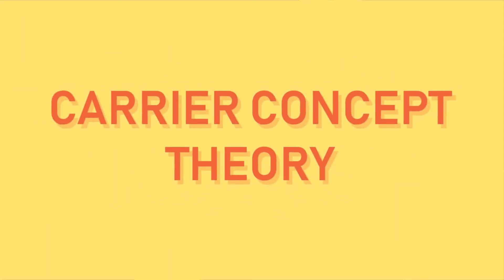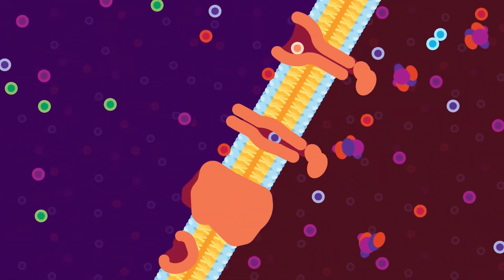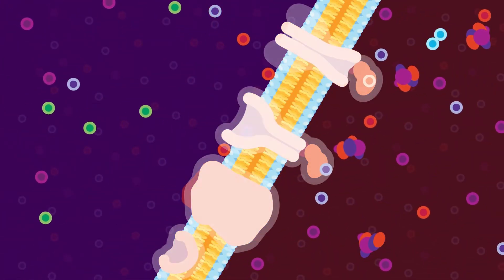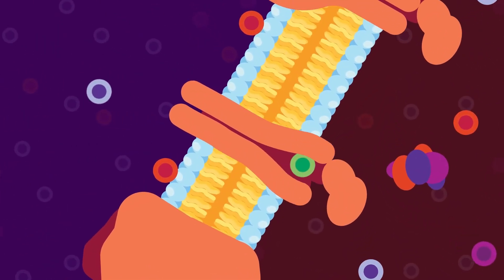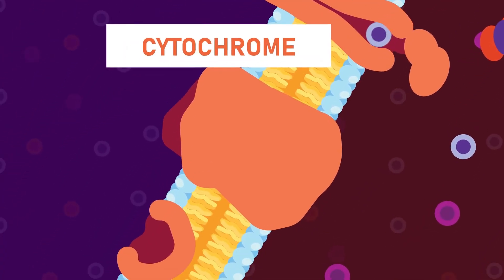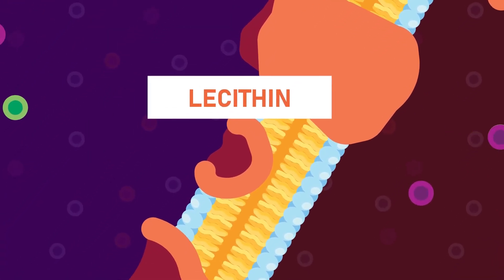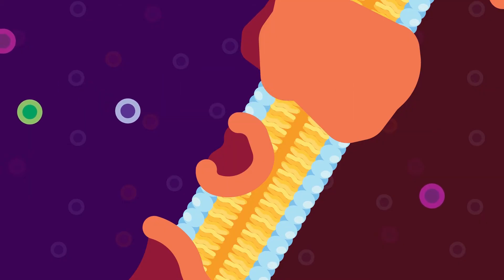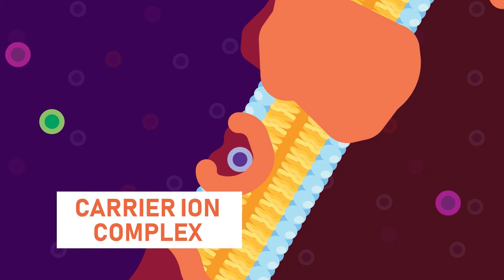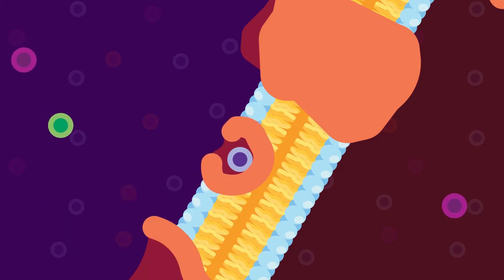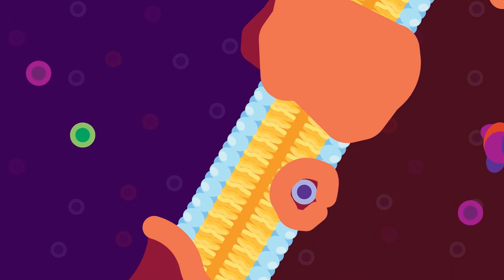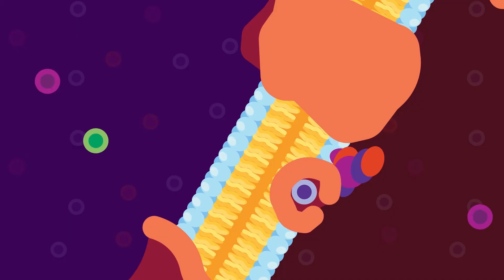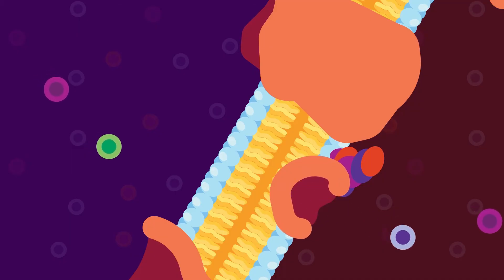According to the carrier concept theory, the movement of ions across a membrane is mediated by special carrier molecules present in the membrane. These carrier molecules are usually proteins, but they can also be cytochromes and lecithin. Generally, the carrier molecule works by binding ions to form a carrier-ion complex, causing a change in the conformation of the carrier molecule. The carrier-ion complex passes through the membrane, and when it reaches the inner side, the carrier molecule changes its conformation and releases the ion.